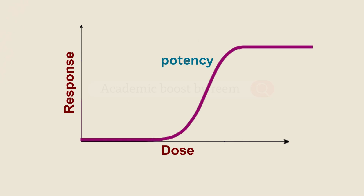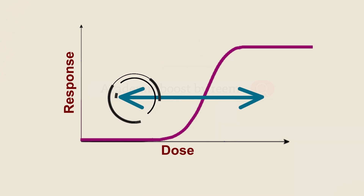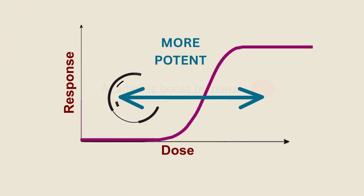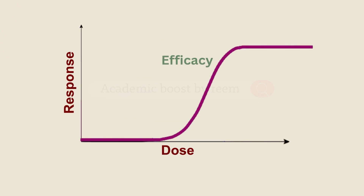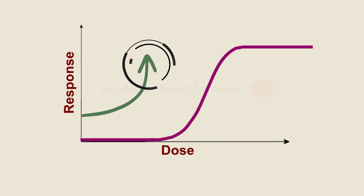To sum up, if we look at the dose-response curve: potency is shown by how far left or right the curve is — the further left, the more potent the drug. Efficacy is shown by how high the curve goes — the taller the curve, the greater the efficacy.